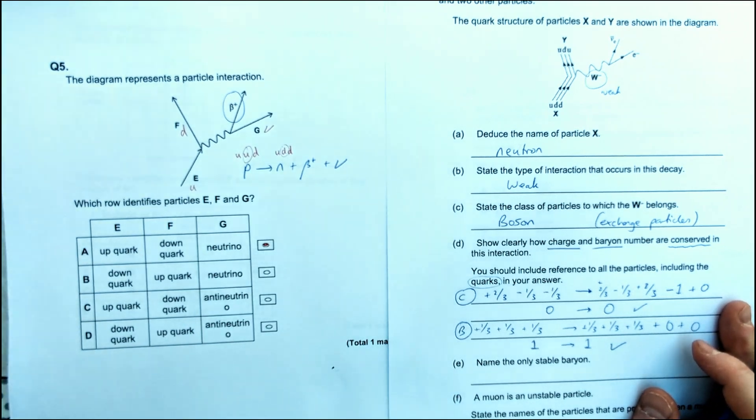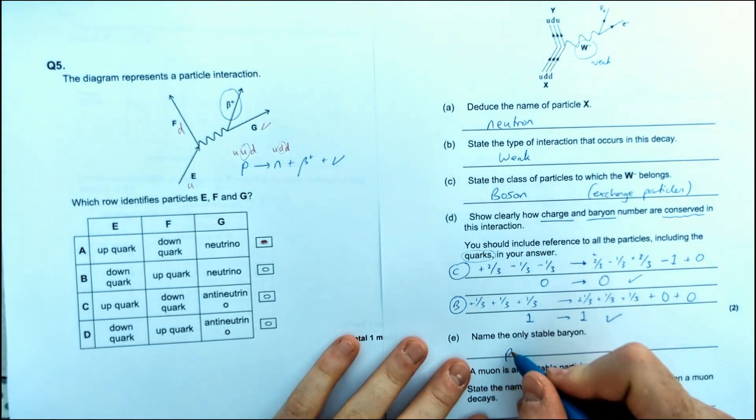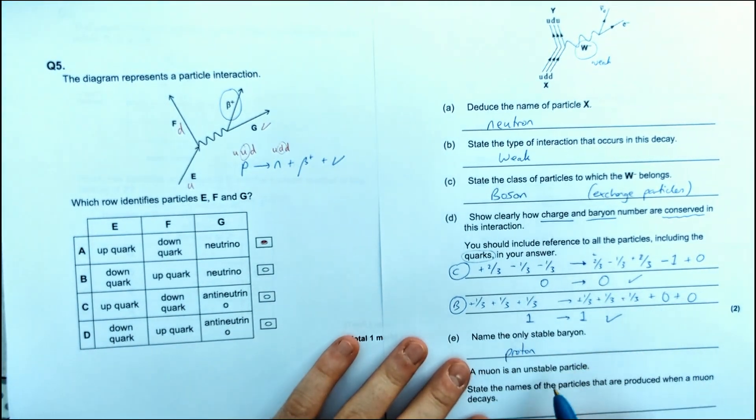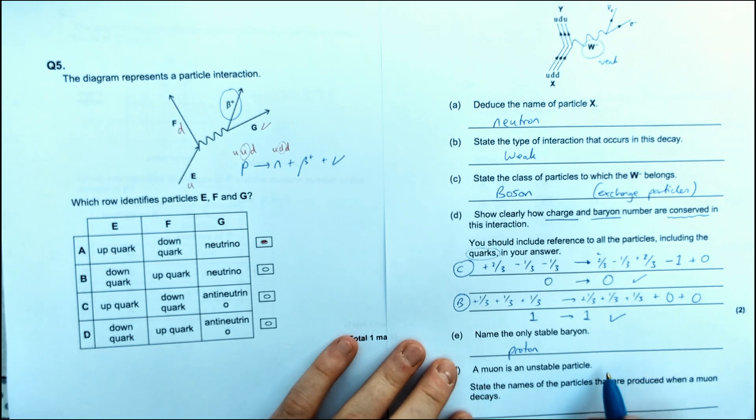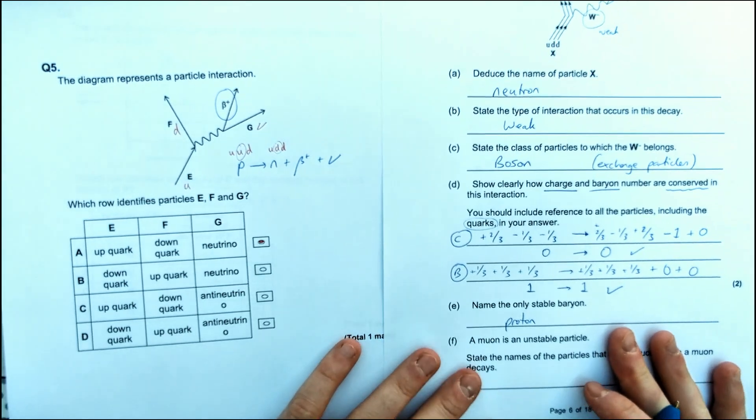The only stable baryon, which is a fact you guys need to know, this would be the proton. So proton is the only baryon that doesn't decay very quickly.